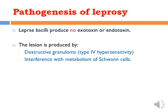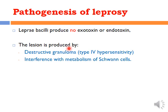Regarding the pathogenesis of leprosy: similar to TB bacilli, Mycobacterium leprae does not produce exotoxin, endotoxin, or any enzyme. The main pathological effects are due to the human immune reaction against these bacilli — a type IV hypersensitivity reaction — also producing destructive granulomas.